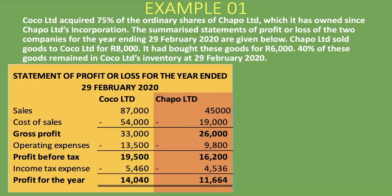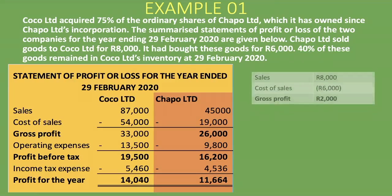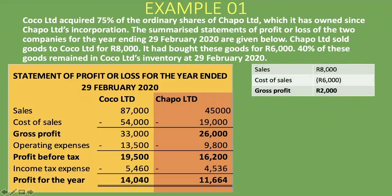We have to eliminate the sale the subsidiary recorded when it sold to the parent company — we deduct that 8,000 rand from the sales figure in the consolidated statement, and we deduct the exact same 8,000 rand from cost of sales. First, let's calculate the profit the subsidiary made: it sold the inventory for 8,000 rand and its cost was 6,000 rand, giving a profit of 2,000 rand. That is the profit Chapel Limited made by selling to Coco Limited.